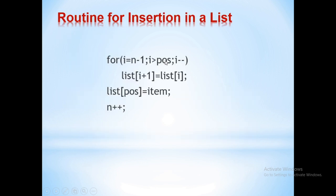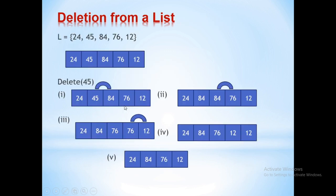This loop is repeated until the array index reaches the position at which the new element has to be inserted. Next, the new element is copied into the list at array position pos. Since the new element has been inserted, the array size is incremented by one using n plus plus. Next, we'll see how to delete an element from a list.